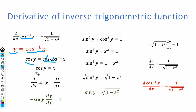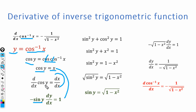Now taking the derivative of this equation, the derivative of cos y is minus sine y. So on the left hand side we have minus sine y times dy by dx, and on the right hand side the derivative of x is just 1. So we have minus sine y times dy by dx is equal to 1. This is equation number 1.